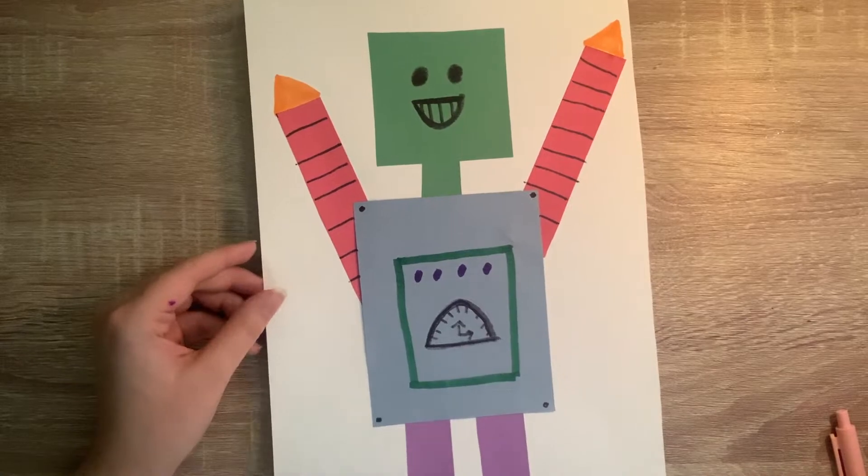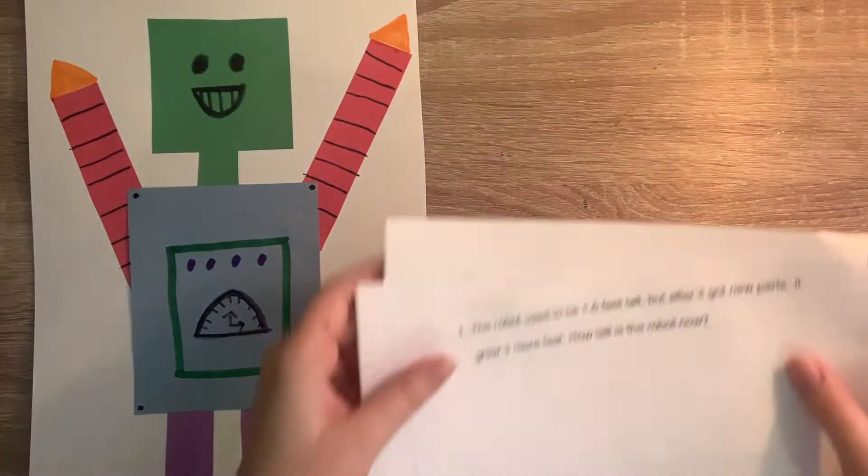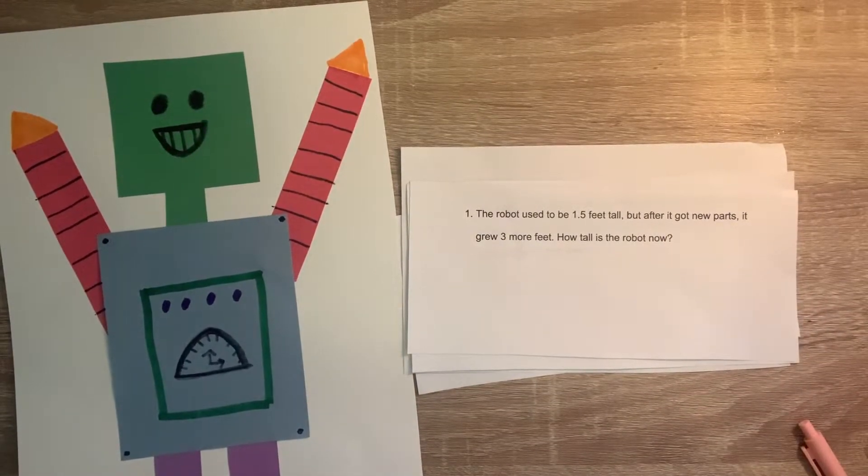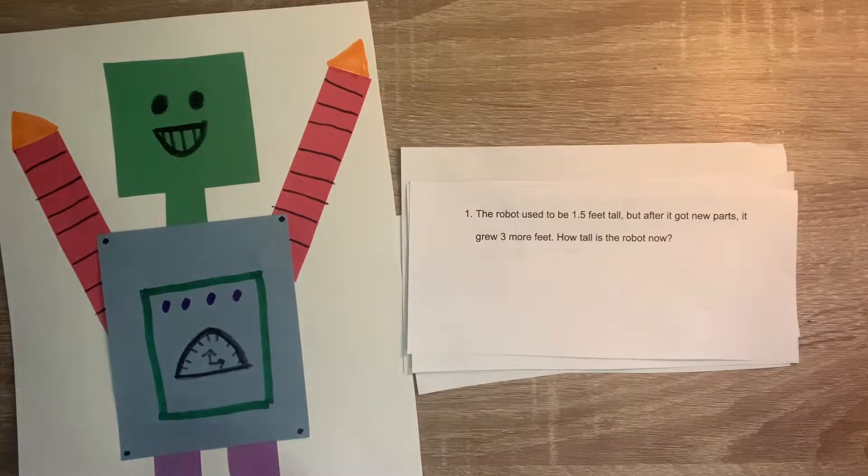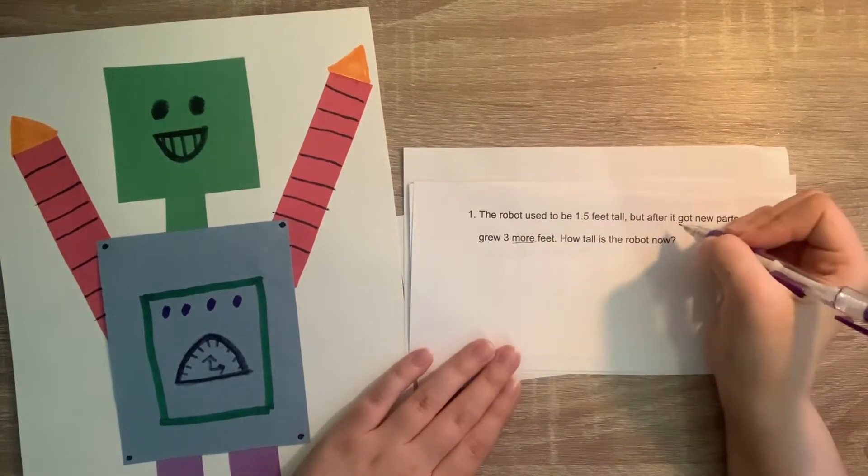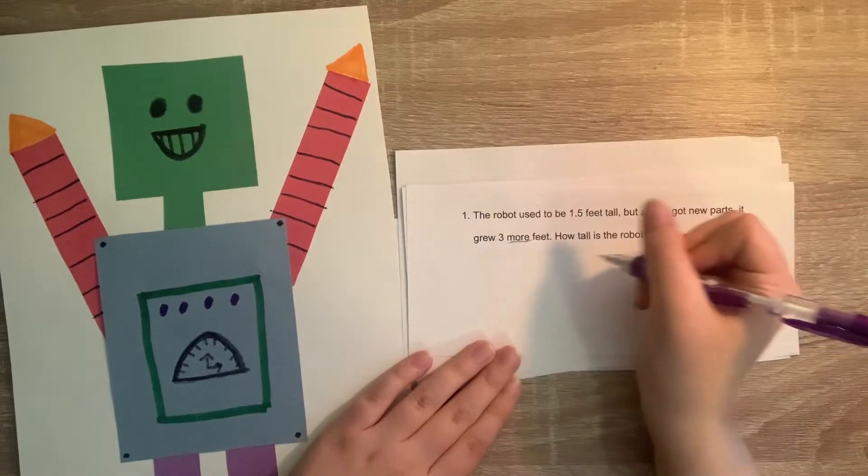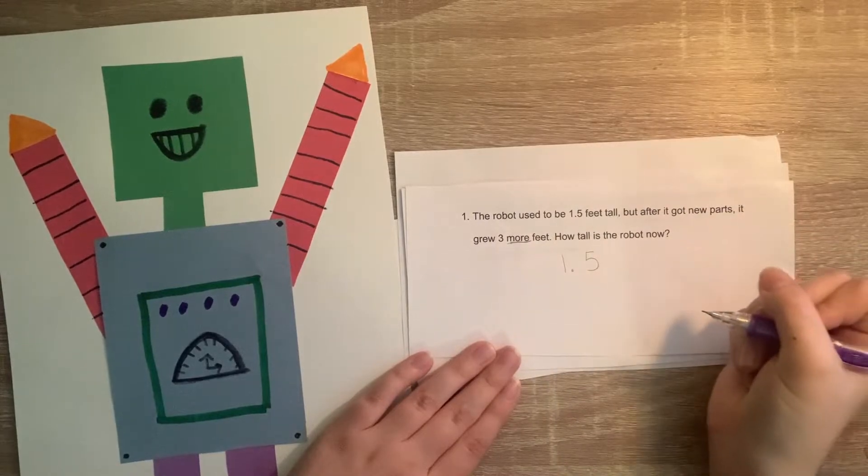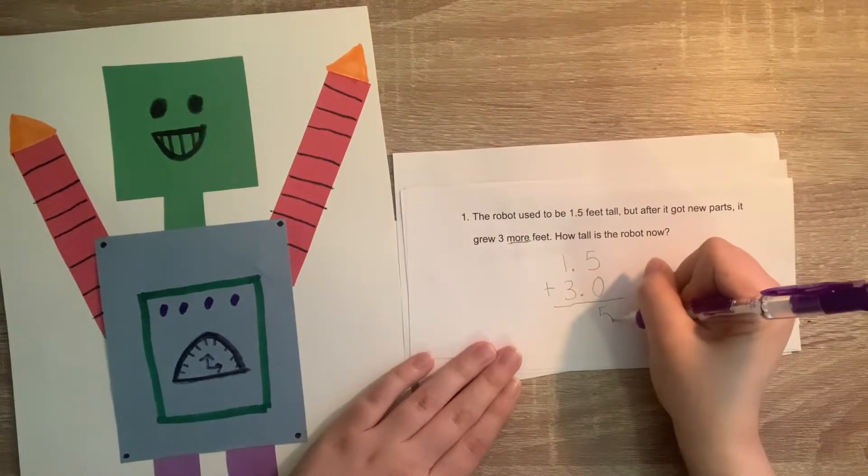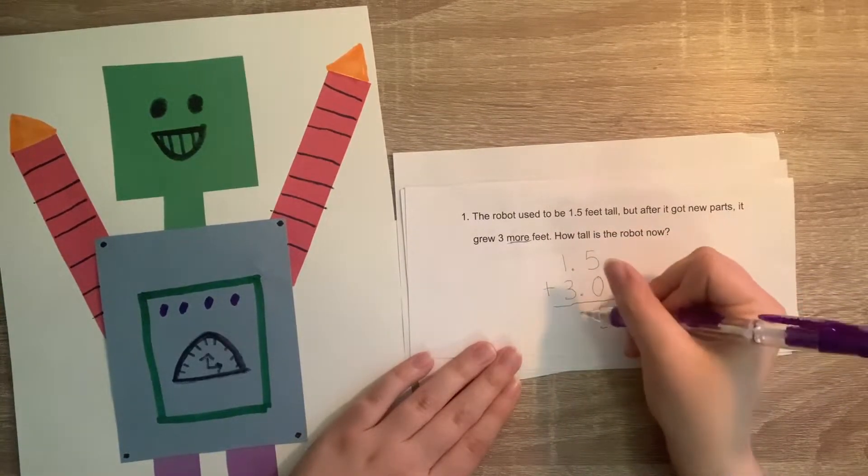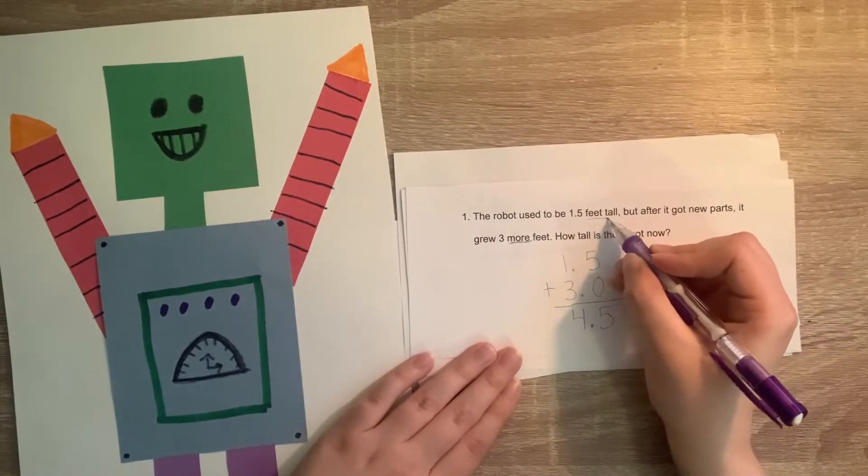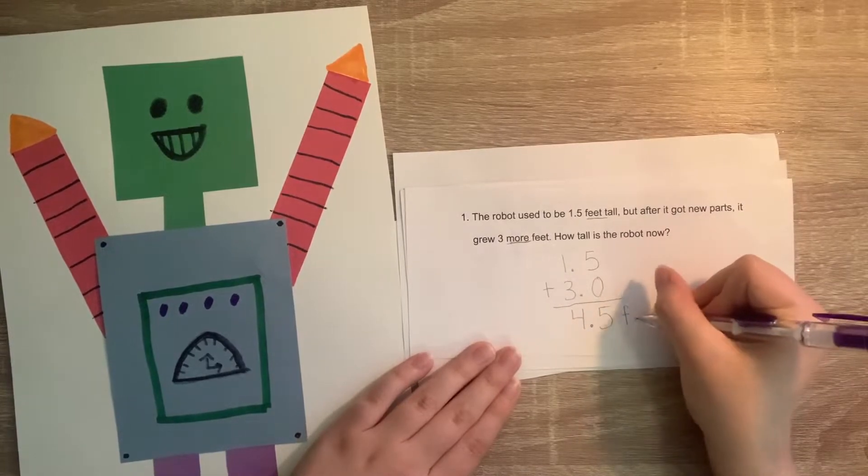Now we are going to answer some questions about our robot. Go ahead and set your robot to the side. I have some prepared word problems here. The first word problem says the robot used to be 1.5 feet tall but after it got new parts it grew 3 more feet. How tall is the robot now? Well we know that we have to add because it says it grew more. So it's 3 more than 1.5. So to solve this problem we are going to do 1.5 plus 3.0. 5 plus 0 is 5 and 3 plus 1 is 4. So the answer is 4.5 but we also need to write the unit which is feet. It is 4.5 feet tall now.